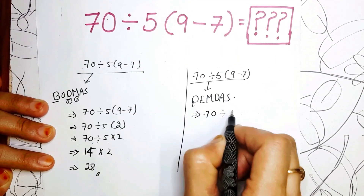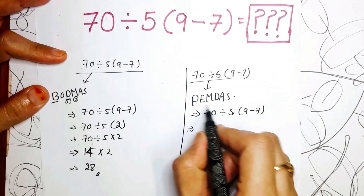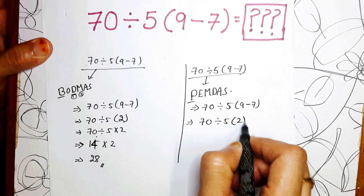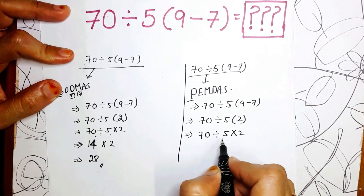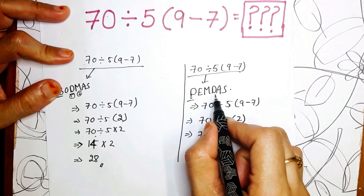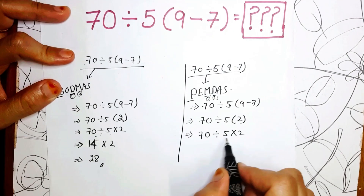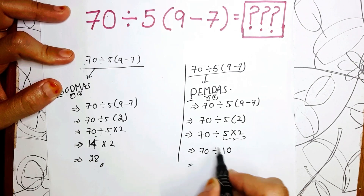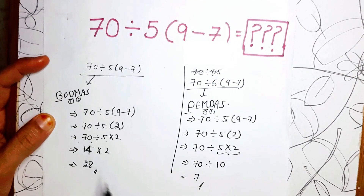Now using PEMDAS for the same question: 70 ÷ 5(9 − 7). Parenthesis first: 9 − 7 = 2, giving 70 ÷ 5 × 2. According to PEMDAS, Multiplication comes before Division, so we do 5 × 2 = 10 first, then 70 ÷ 10 = 7. So the PEMDAS answer is 7. For the same question, we are getting two different answers.